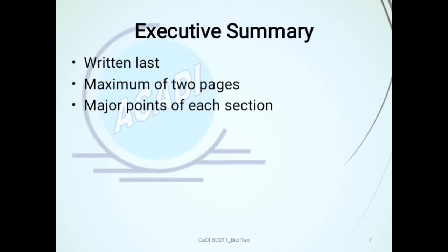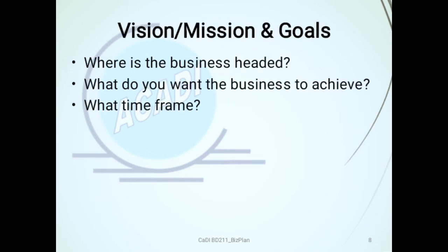The executive summary covers major points of each section. It should include the vision, mission, and goals — explaining where the business is headed, what you want the business to achieve, and within what time frame.